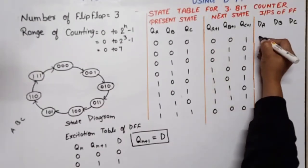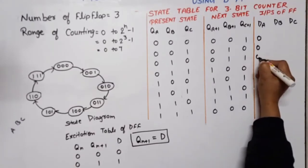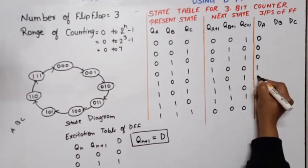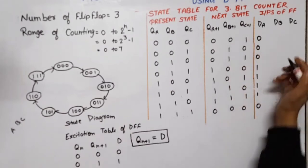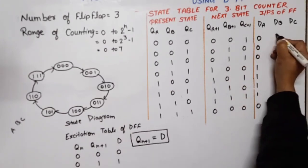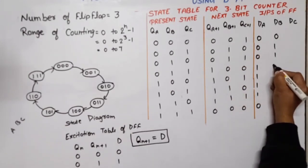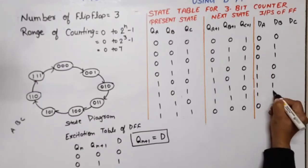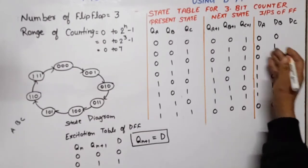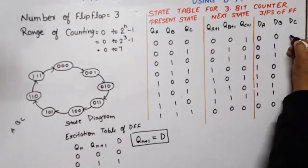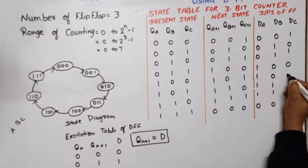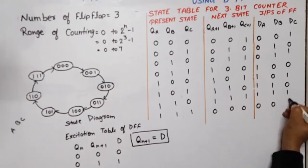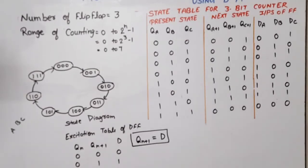So QA+1 gives us DA values: 0, 0, 0, 1, 1, 1, 1, 0. QB+1 gives us DB values: 0, 1, 1, 0, 0, 1, 1, 0. And QC+1 gives us DC values: 1, 0, 1, 0, 1, 0, 1, 0. These are the input values for our flip-flops.